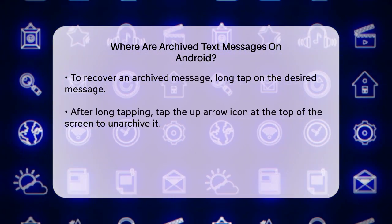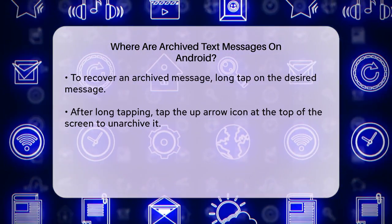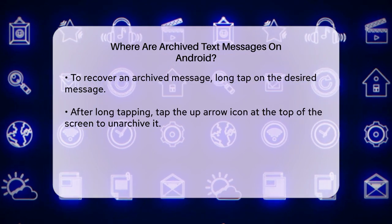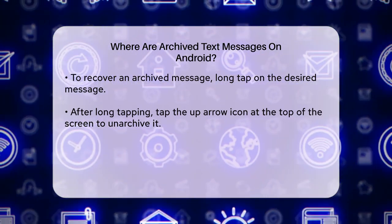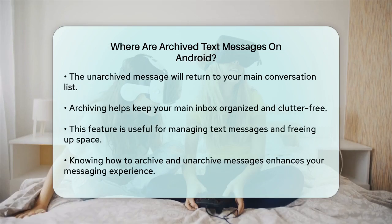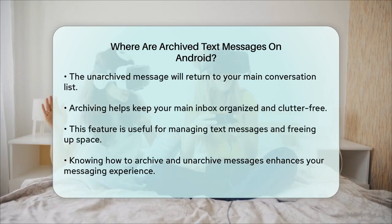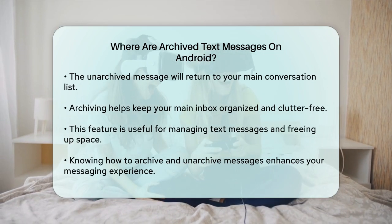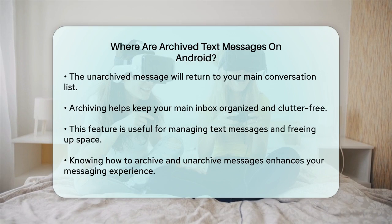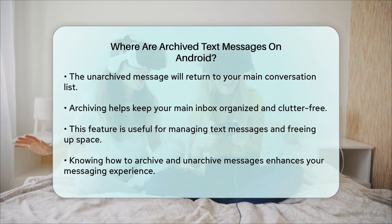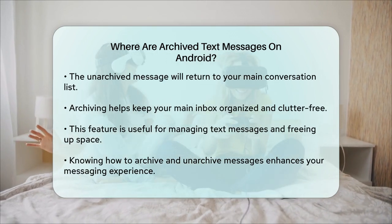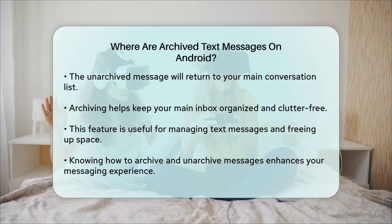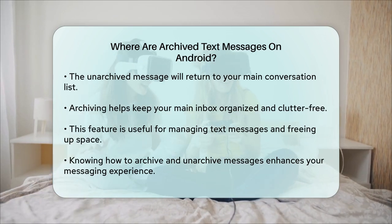To summarize: archived text messages are stored in a separate section within the Messages app, accessible through the Archive option in the menu. This helps keep your main inbox clutter-free while still allowing you to access those messages whenever you need them. By following these simple steps, you can easily manage your text messages and keep your inbox organized. Whether you're looking to free up space or just keep certain conversations out of the way, archiving messages is a handy feature to know about.